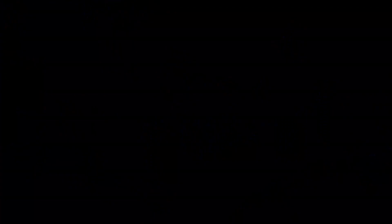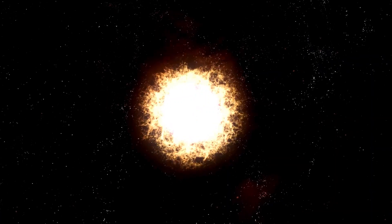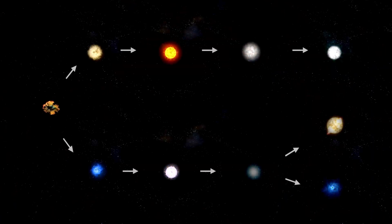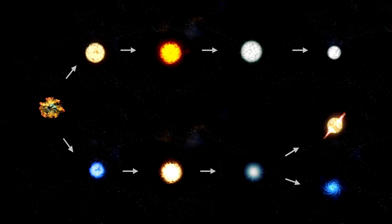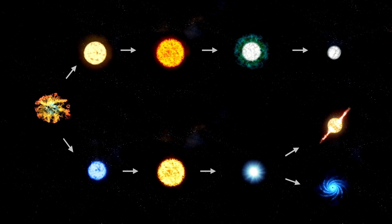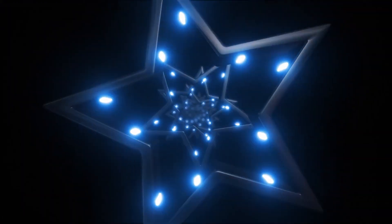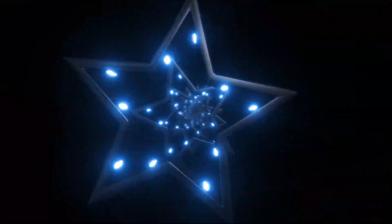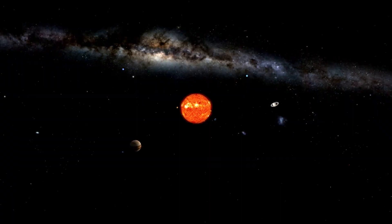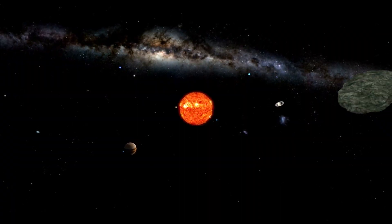Betelgeuse loses about one solar mass every 10,000 years, ejecting materials evenly in all directions, forming a nebula around it. This nebula has a diameter of 30 astronomical units, which is 30 times the distance between the Earth and the Sun, and is 250 times larger than the star itself.